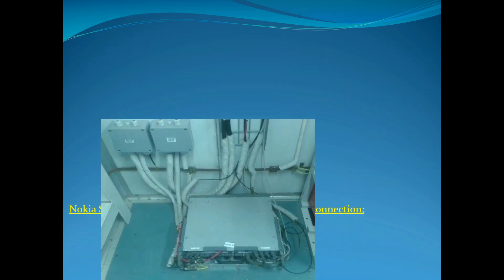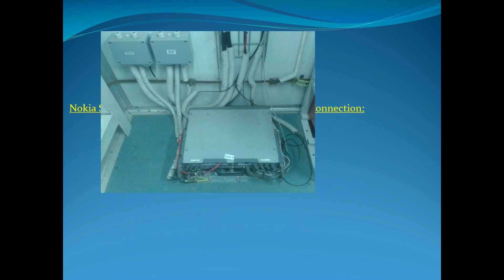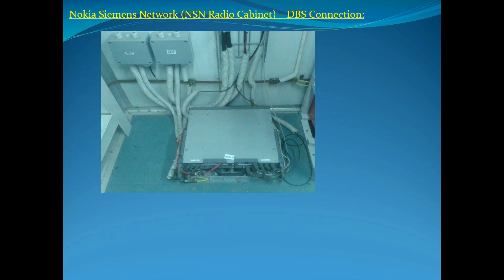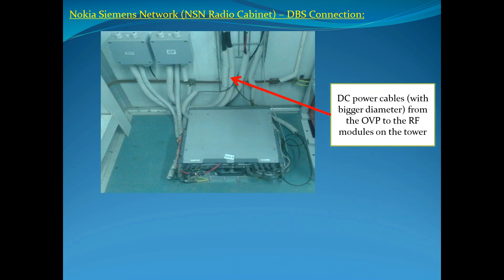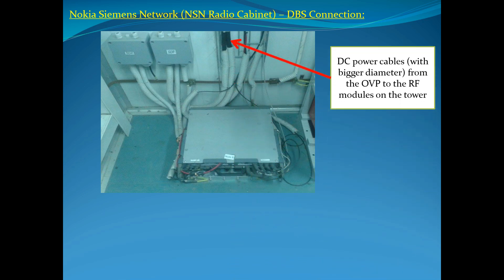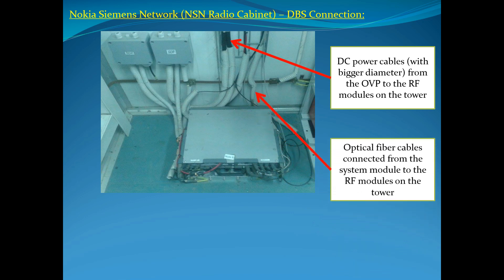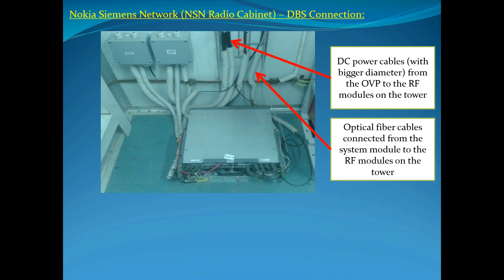Nokia Siemens Network, NSN Radio Cabinet — DBS Connection. DC Power Cables with bigger diameter run from the OVP to the RF Modules on the Tower. Optical Fiber Cables are connected from the System Module to the RF Modules on the Tower.